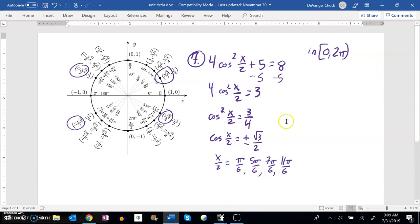But these are not the x values, right? These are x over two. So I'm going to multiply both sides by two to get it just in terms of x.